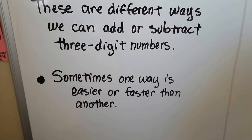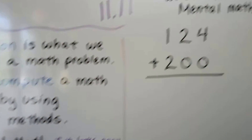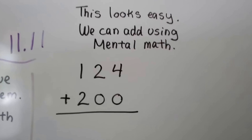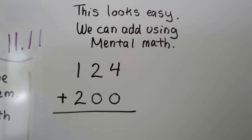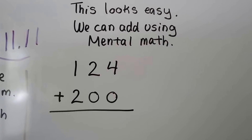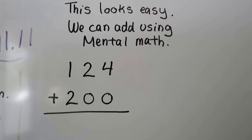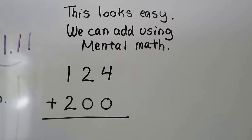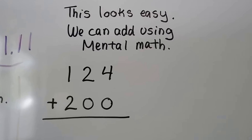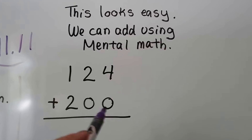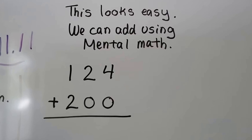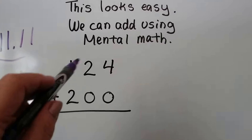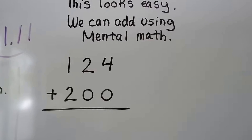Sometimes one way is easier or faster than another. Take a look at this one - it looks easy. We can add this using mental math. We're just adding 200 to 124, so we just add the hundreds because there are no ones or tens. We could do that quickly in our head - that would just be 324.